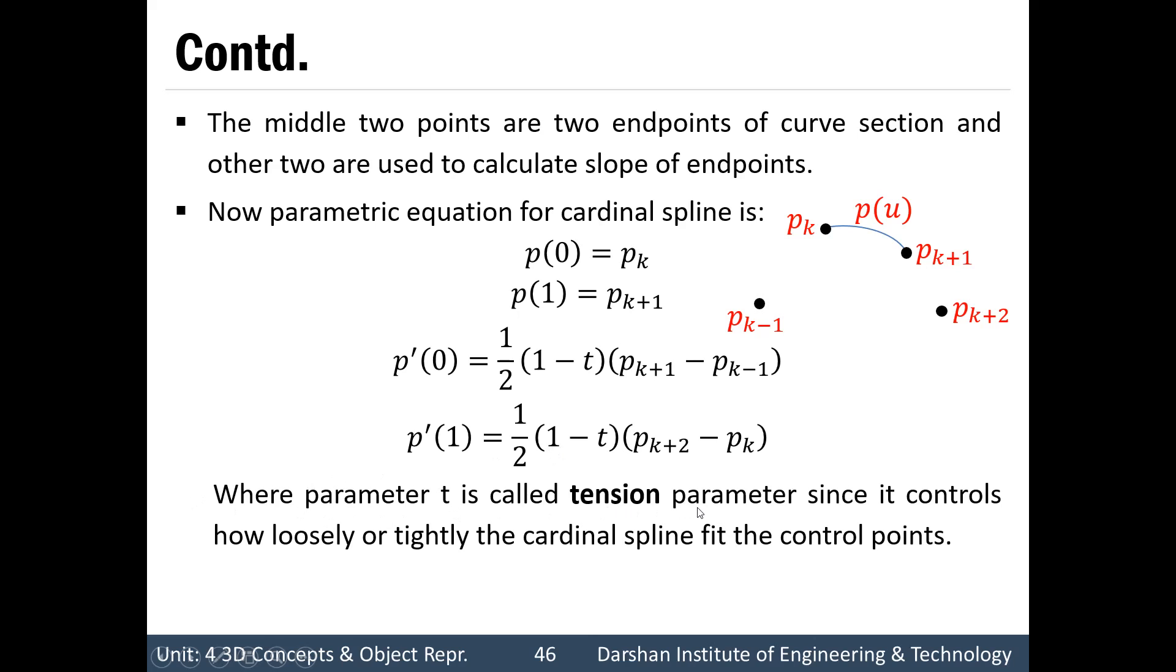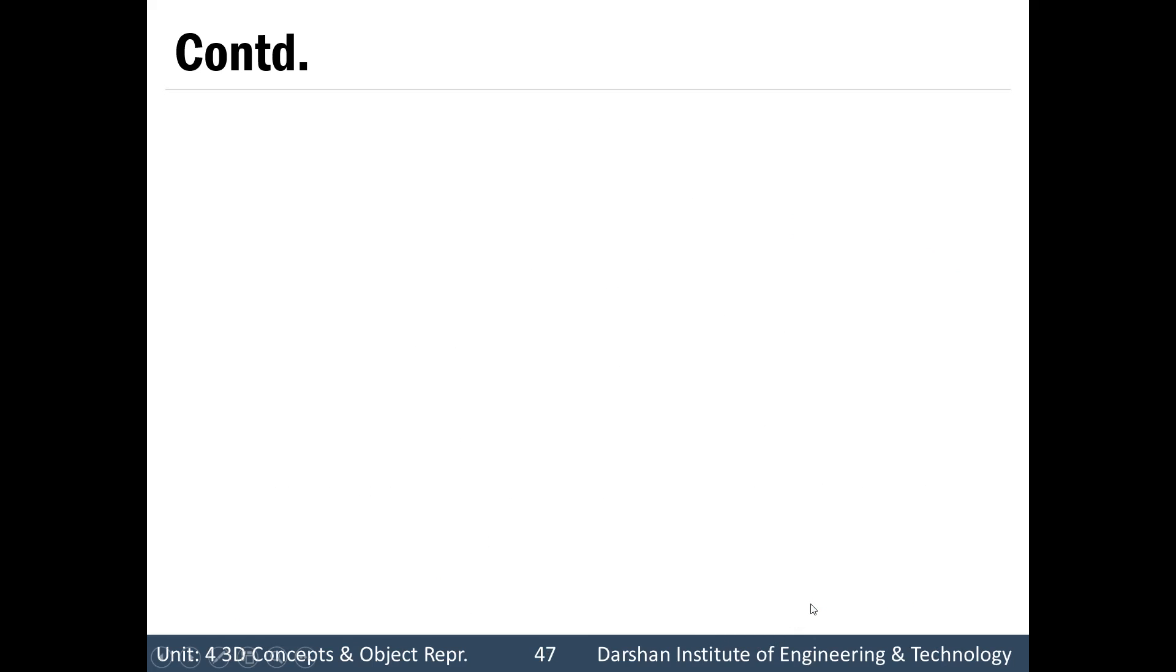Where parameter t is called tension parameter since it controls how loosely or tightly the cardinal spline fits the control point. Where t is less than 0, then it will form a loose curve and if t is greater than 0, it will form a tighter curve.